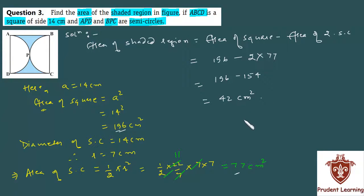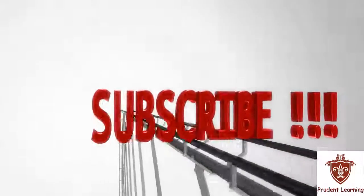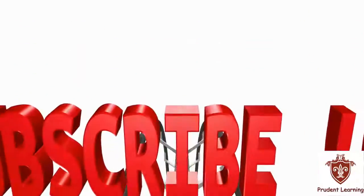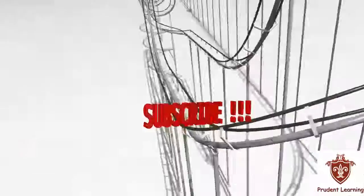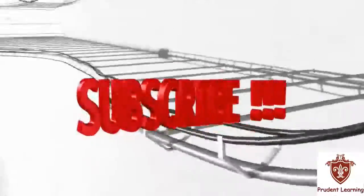So finally we have area of shaded region as 42 centimetre square. This completes our solution. Let us see the 4th question.